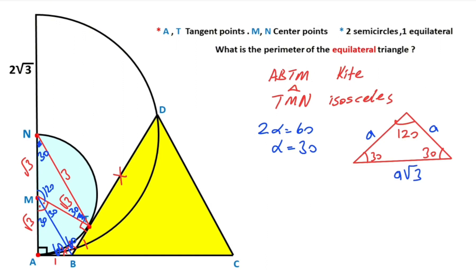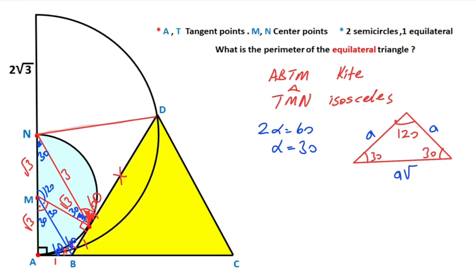If you focus on point T, we know that a straight angle equals 180 degrees, which means 60 degrees are left here. Then if we connect these two points, this length is also the radius of the big semicircle, so 2√3.